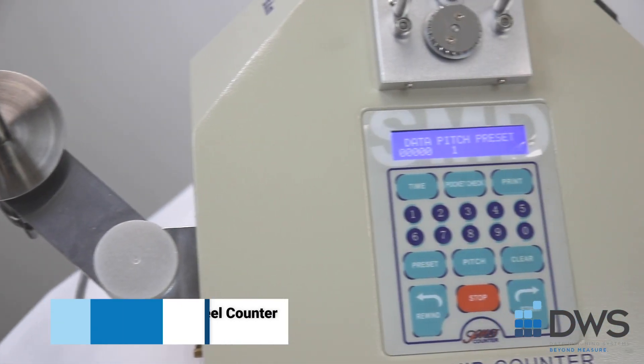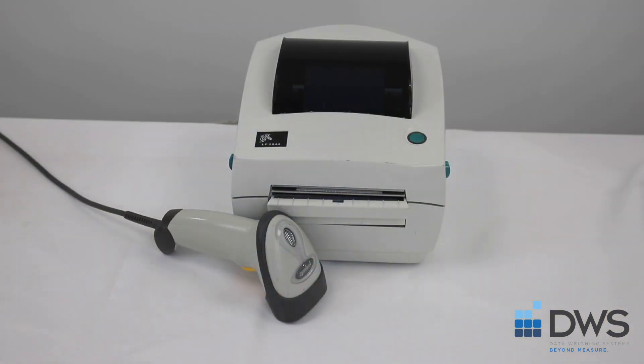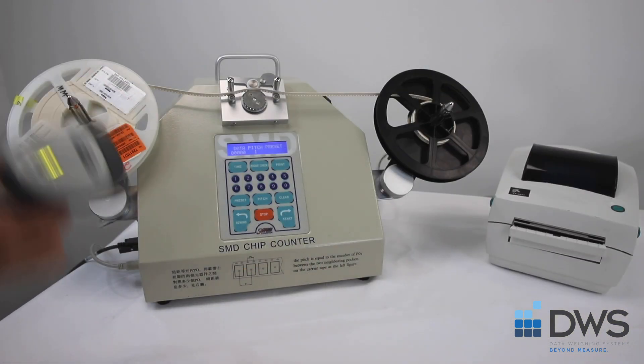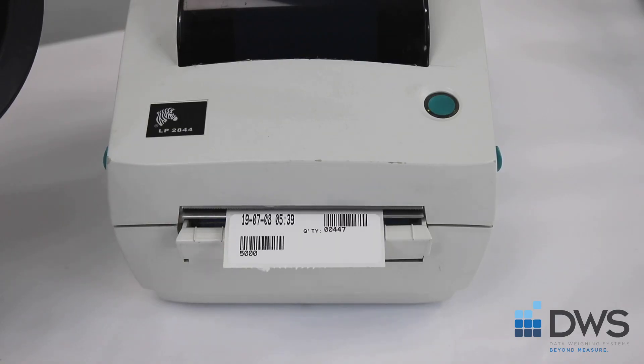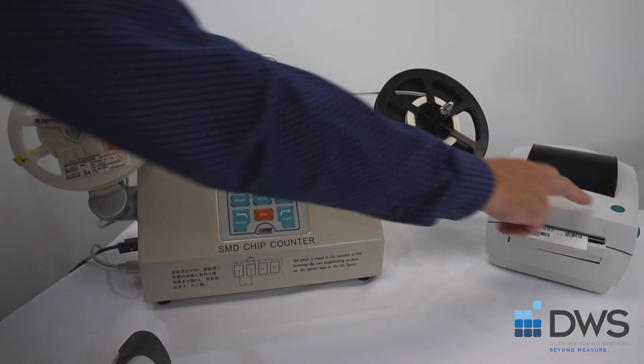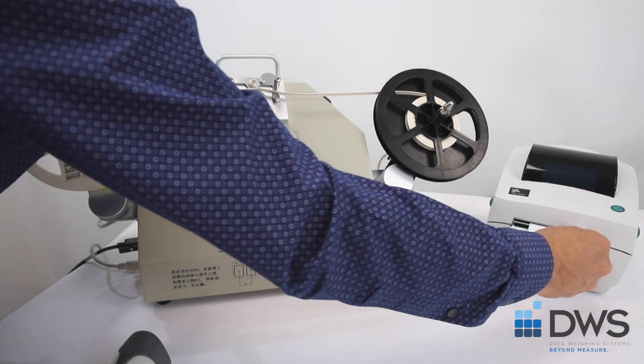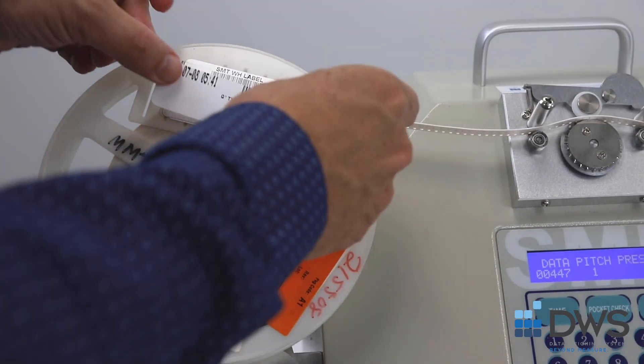These motorized reel counters can be equipped with a barcode scanner and label printer. This enables you to scan a barcode and reprint a label with the actual count, item ID, and date. This is very useful for relabeling the reel or labeling your inventory tags.